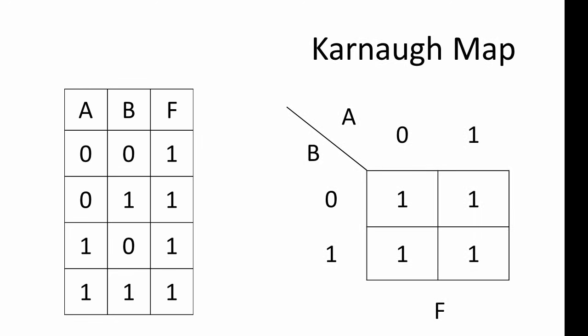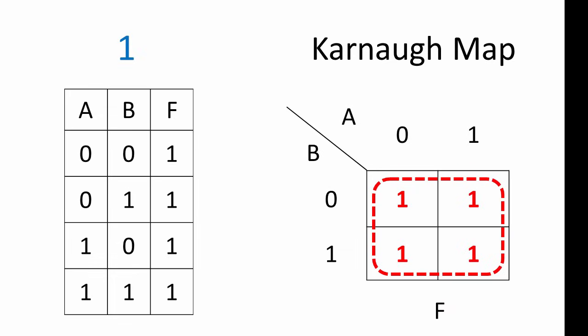In this truth table, the output is always 1 regardless of the inputs. Here's the K-map which matches this truth table. We can create one large group of 1s here. Clearly, the output is independent of all of the inputs — it is always 1. So the Boolean expression for this circuit is simply 1.